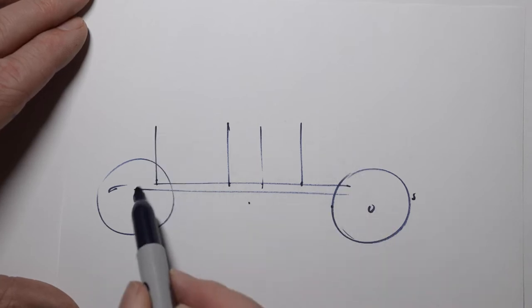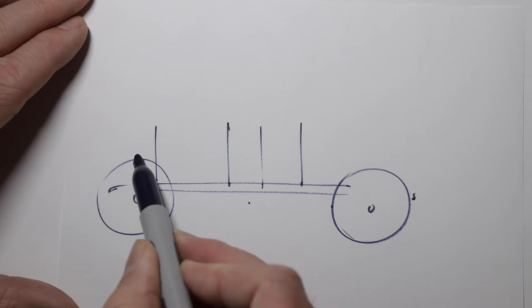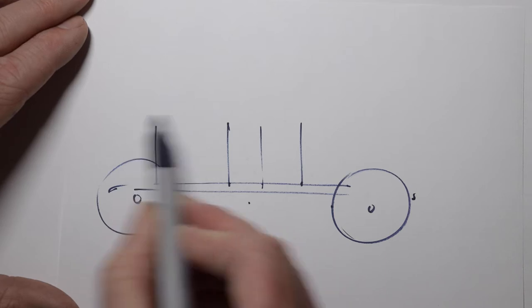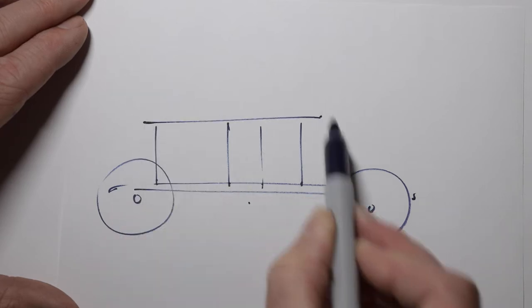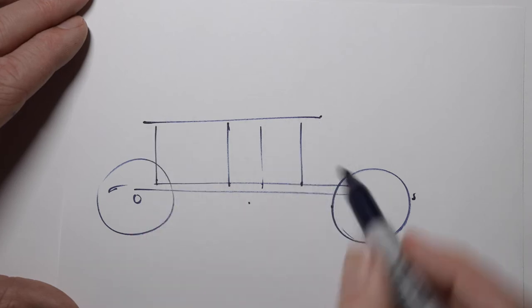And then the top edge of the car is going to be half a wheel up. So if we go here's half a wheel, add another half a wheel and go horizontal or this tiny slope would be good.